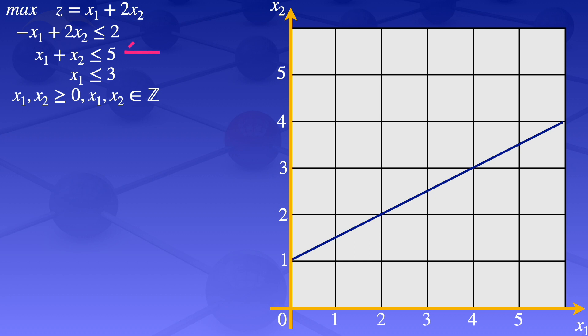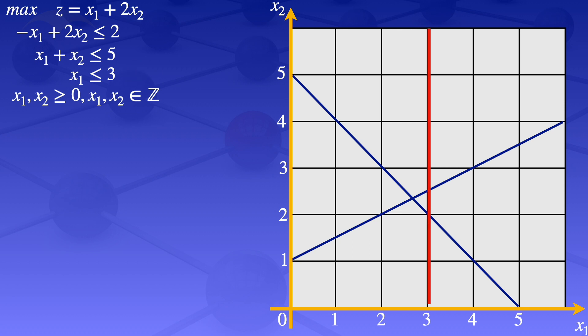Draw the line which represents the second constraint, and that line is this one here. Draw the line which represents the third constraint, x1 = 3, so I will be drawing this line here. Then shade the feasible region — the region which satisfies all the constraints — that region is this one highlighted in green. Go on and label the corner points of the feasible region.